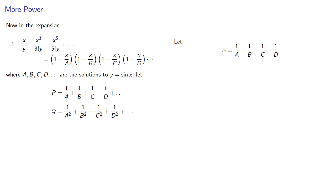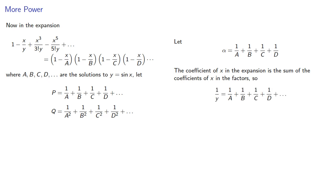The coefficient of x in the expansion is the sum of the coefficients of x in the factors. Comparing our coefficients gives us, this was Euler's first result, alpha is 1 over y. And since we know alpha is the sum of the reciprocals, then this sum of the reciprocals is 1 over y.